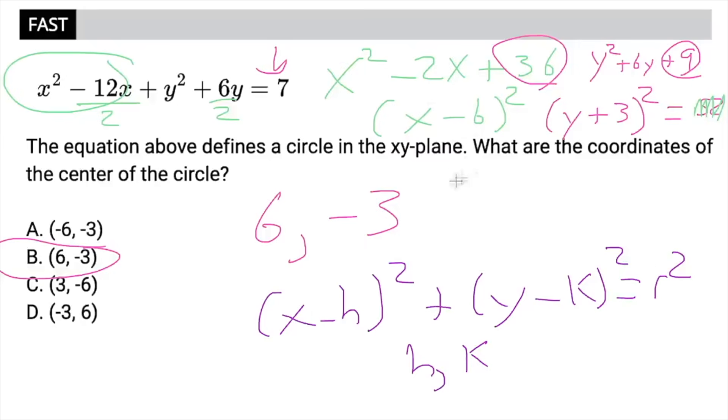And the middle is h, which is 6, because remember, it's minus h. So that negative 6 would become positive. And then y minus k, so this is negative 3. So that's 6, negative 3.